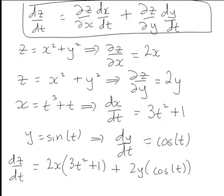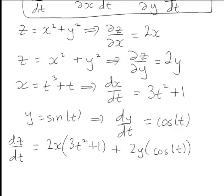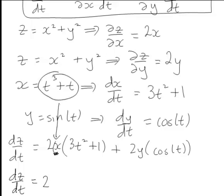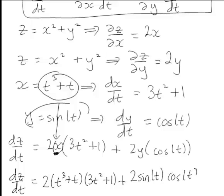You'll notice this answer is a mixture of x, y, and t terms. If we wanted to write dz/dt purely as a function of t, we can do this quite simply. Looking at the first part, 2x for instance, we saw originally that x equals t³ + t, so that becomes 2(t³ + t), still multiplied by 3t² + 1. And similarly, y in this case was sin(t), so 2sin(t) for 2y times cos(t).